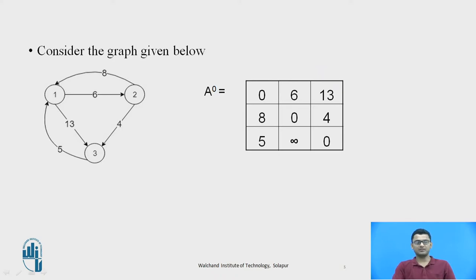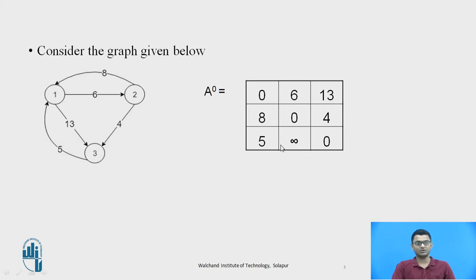Consider the graph given — it has three vertices: 1, 2, and 3. This is the initial matrix A0. We have marked 1 to 1 as 0, 2 to 2 as 0, and 3 to 3 as 0 because there is no self loop. We have marked edge 3 to 2 as infinity because there is no direct path leading from 3 to 2, and the rest of the edges are marked with their respective weights as stated in the graph.